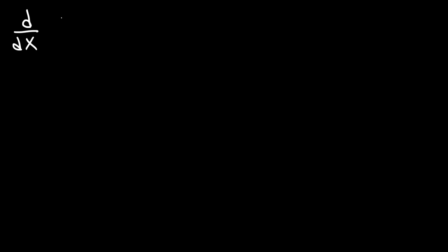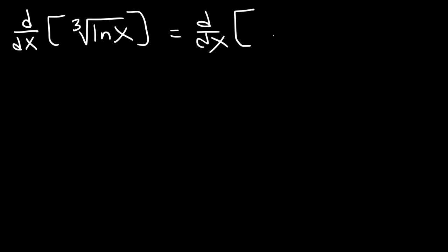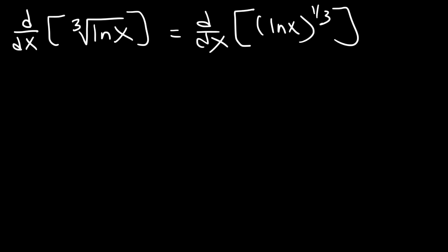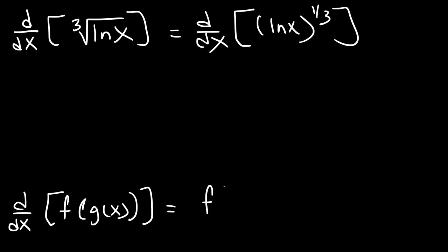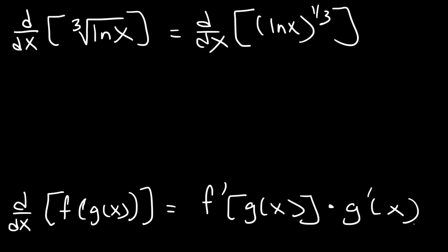Here's another problem: find the derivative of the cube root of ln x. I suggest rewriting the expression — the cube root of ln x is basically ln x raised to the 1/3. This time the 1/3 applies not just to x but to the entire ln x expression, so you can't just move it to the front. We need to apply the chain rule. To differentiate a composite function f of g of x, you differentiate the outside part, keeping the inside the same, then multiply by the derivative of the inside.